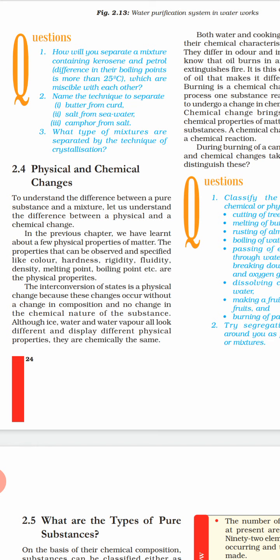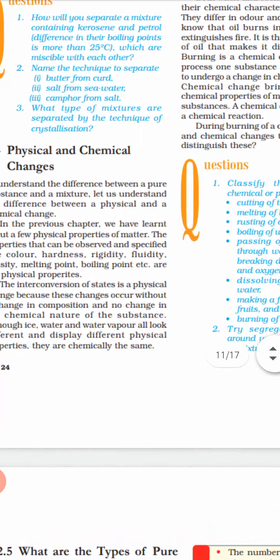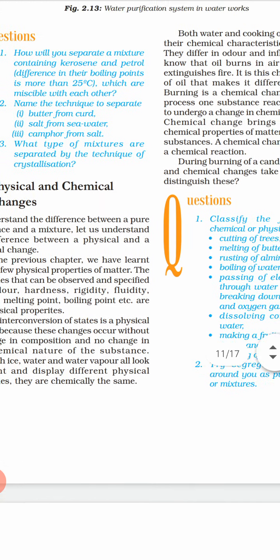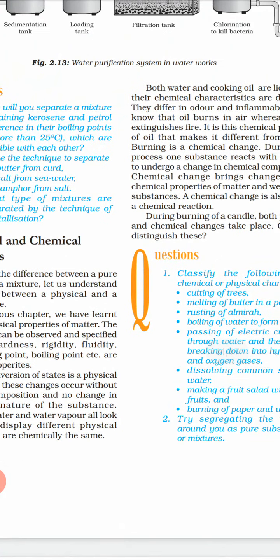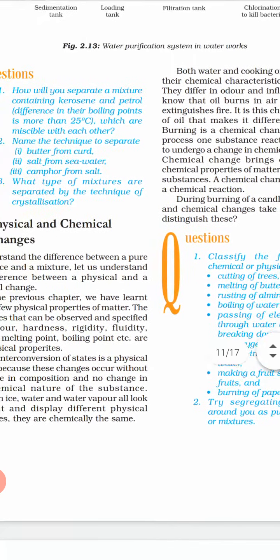Physical change means there is a change of state — it was solid, now it is liquid. Similarly, if you heat it more, after some time that water will be converted to vapor. When it is vapor the formula will remain H2O, but there is a physical change — it has converted its state from liquid to vapor, but the formula is still the same. That is a physical change.